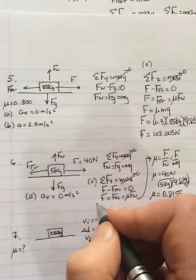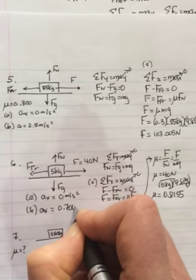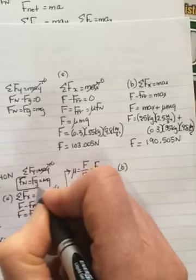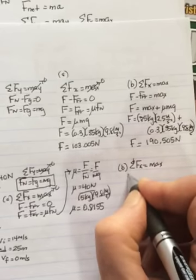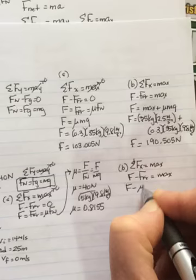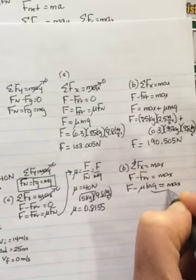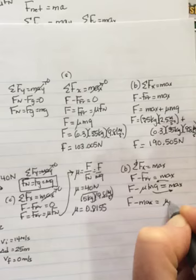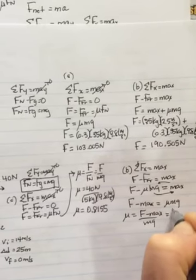Part B says that the 40 newton force continues and the box accelerates. So now the box is moving, and it's accelerating at a rate of 0.7 meters per second squared. What's the coefficient of kinetic friction? So for B then, we don't have to do sum of the forces in the Y, because it's still the same. So sum of the forces in the X is equal to Mx, and it'll be F minus friction is equal to Mx. And this time that's not zero. So F minus mu Mg, because that's what Fn is, is equal to Mx. And this time we're solving for mu. So take the mu Mg over, bring the Mx over. So F minus Mx equals mu Mg. So mu will equal F minus Mx over Mg. So the F was 40 newtons.